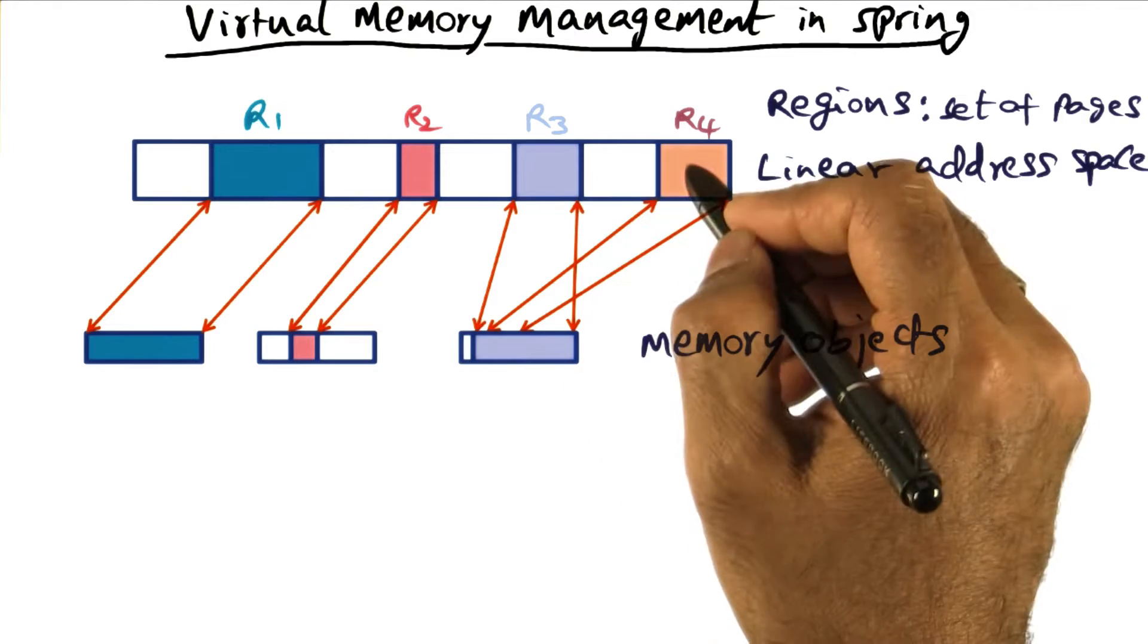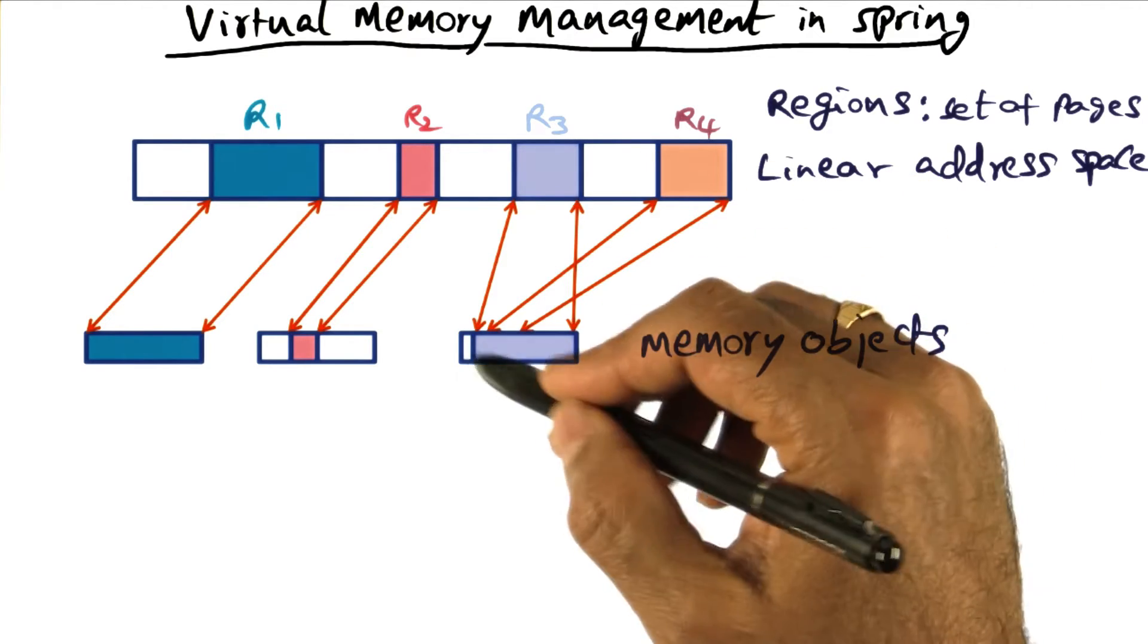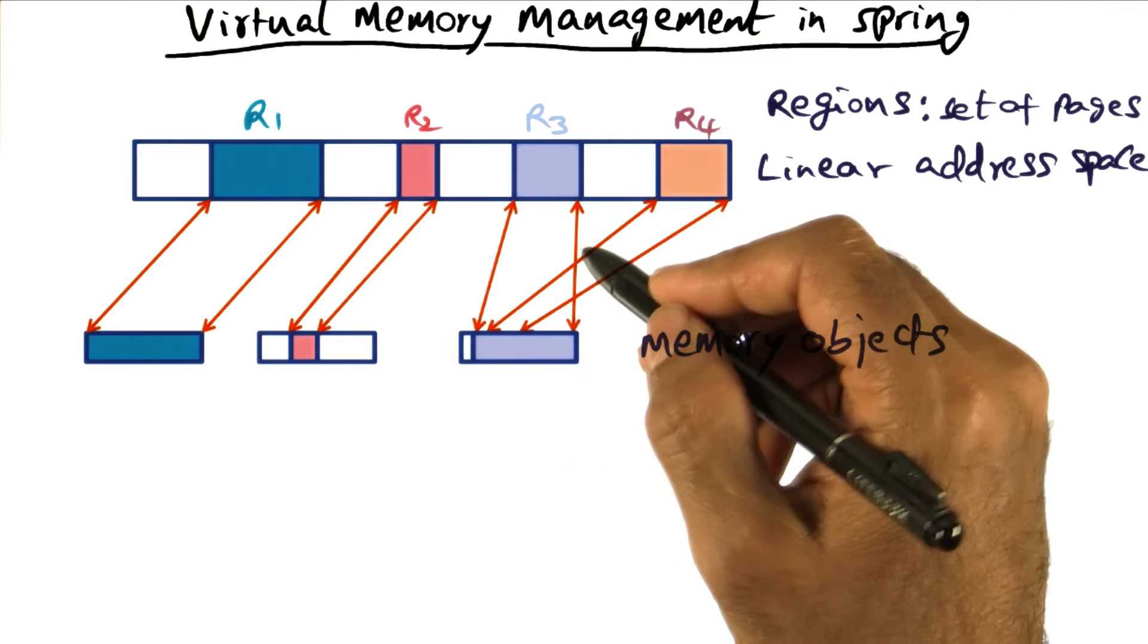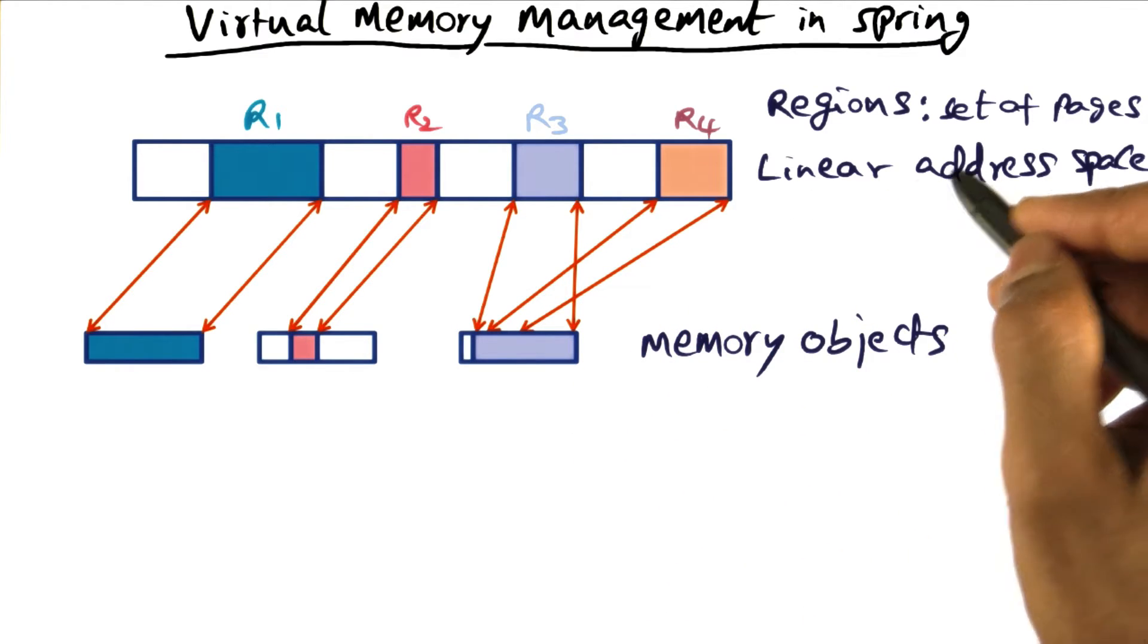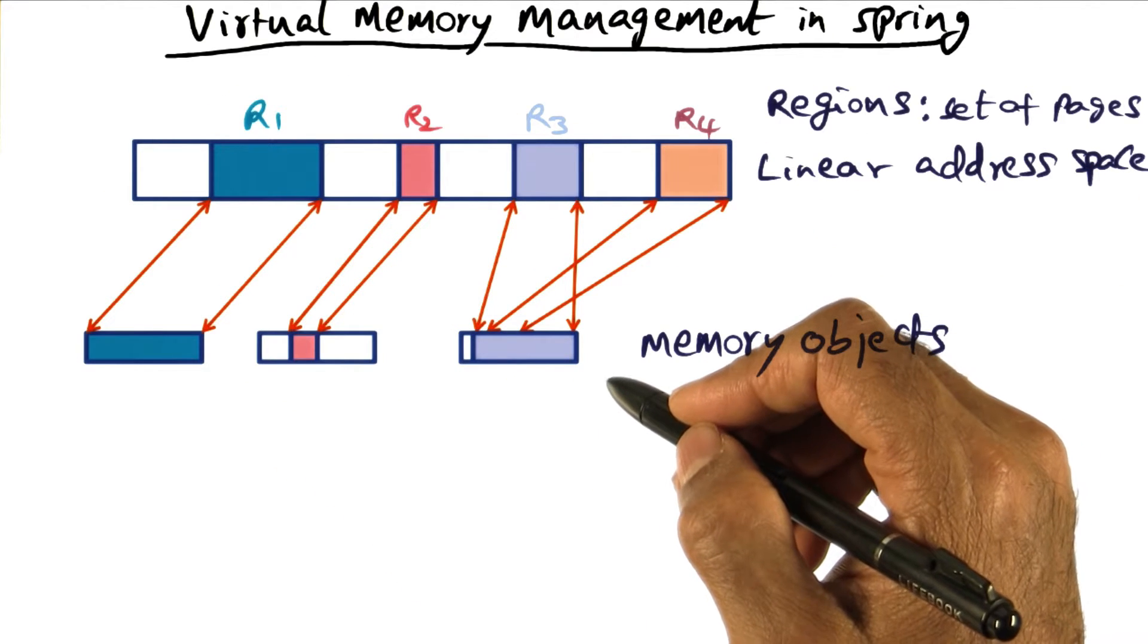And these two regions, different regions of the same address space, are mapped to the same memory object. And this is perfectly fine. So this is how the virtual memory manager takes the linear address space and maps it to these memory objects. And what are these memory objects?